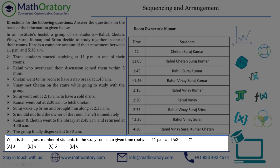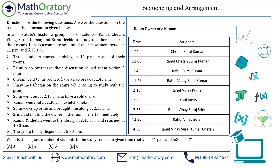The first question asks: what is the highest number of students in the study room at any given time between 11pm and 5:30am? Just look for the highest number of people at any point in the table. Going row by row, you'll find that from 4:30 to 5:30am there are actually five people studying in the room. So the answer for this question is option C — pretty straightforward.